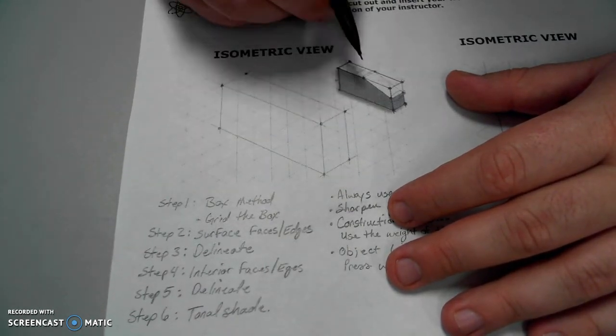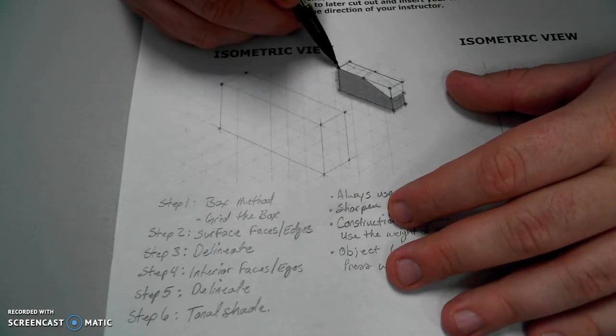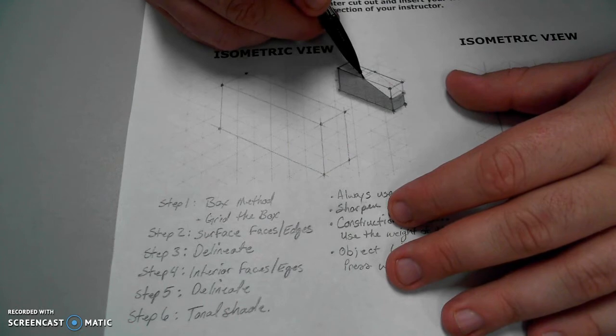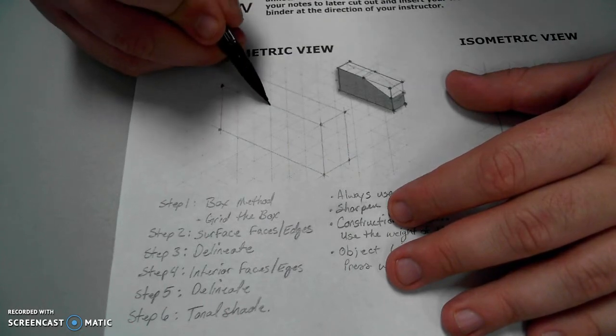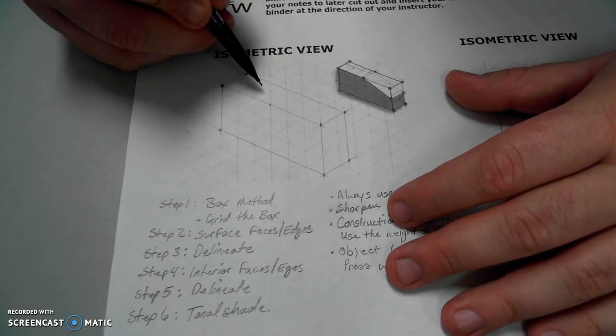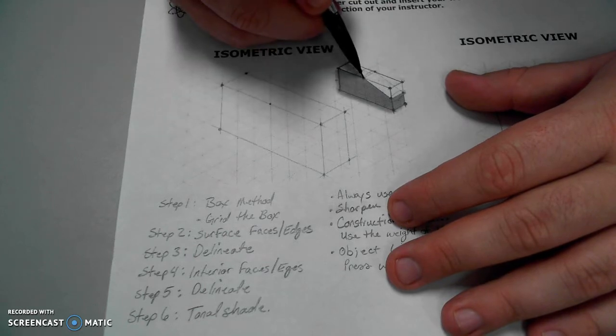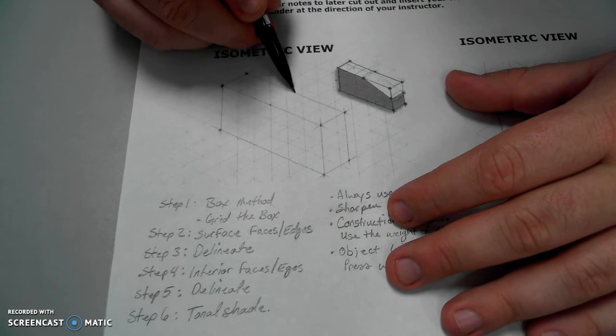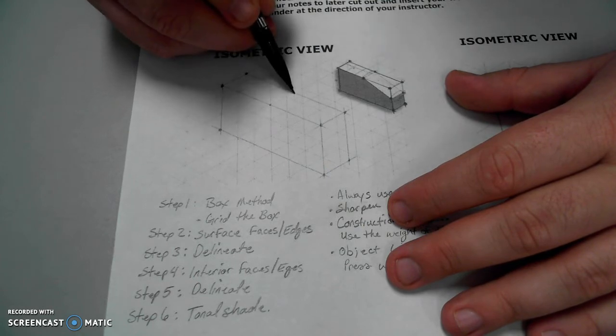So at this point, starting on that top edge from the far left corner, right here, is three units towards the right. One, two, three. I can also look at going back one and a half units along the isometric grid line. One and a half units.